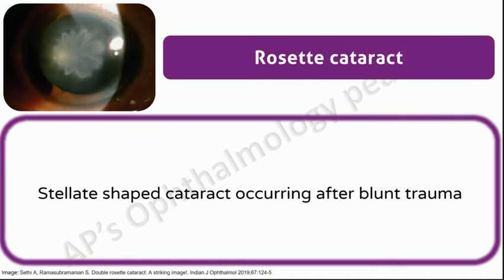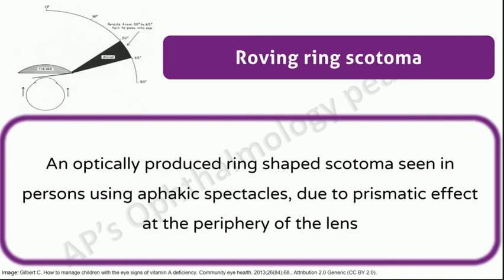Rosette cataract: stellate-shaped cataract occurring after blunt trauma. To know more about rosette cataract, you may click on the link above to watch my video on traumatic cataract. Alternatively, you can click on the link in the description box. Roving ring scotoma: an optically produced ring-shaped scotoma seen in persons using aphakic spectacles due to prismatic effect at the periphery of the lens.